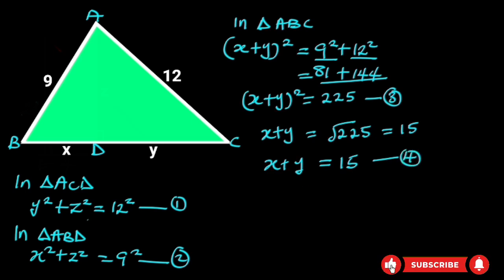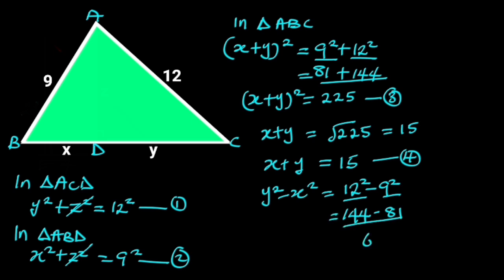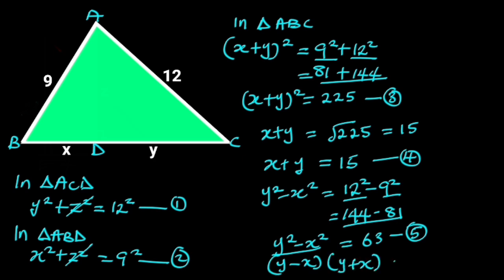Next, let's subtract equation 2 from equation 1. Doing so will give us y squared minus x squared is equal to 12 squared minus 9 squared. 12 squared is 144, and 9 squared is 81. 144 minus 81 is equal to 63. So y squared minus x squared is equal to 63. Let's call this equation 5. Factoring the left side gives (y minus x) times (y plus x) is equal to 63. Let this be equation 6.